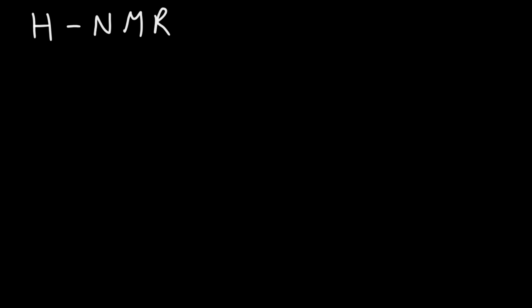Before we go into carbon-13 NMR, typically you'll learn proton NMR, or HNMR. Hydrogen has a mass of 1 — this is the most common form of hydrogen. There are isotopes of hydrogen like deuterium and tritium, but we're going to talk about this particular hydrogen atom. It has only one proton and no neutrons, so you can think of the hydrogen nucleus as a proton. A proton has a positive charge.